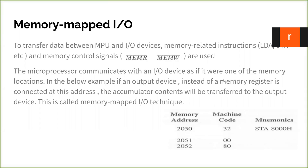If you communicate with the I/O device because of the 16-bit address, it is as if it has a memory location and you communicate with it. In the below example, if an output device, instead of a memory register, is connected at this address — if an I/O device has this address — then you can use STA instead of IN and OUT. You can use STA to transfer the content of the accumulator to this particular device. This is called memory map I/O.